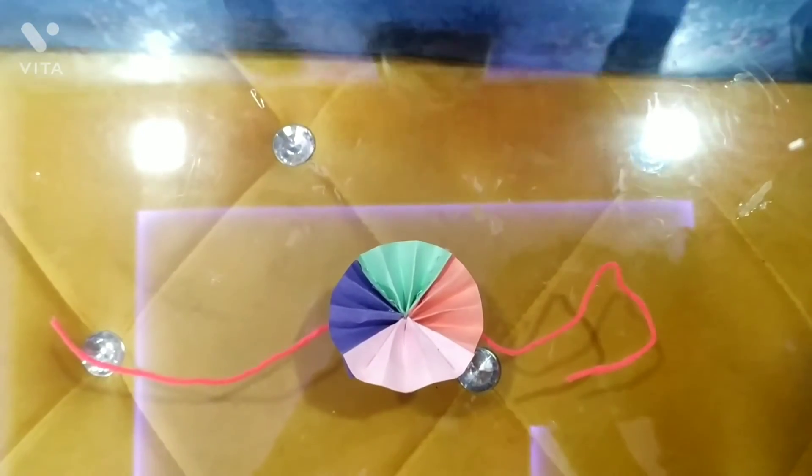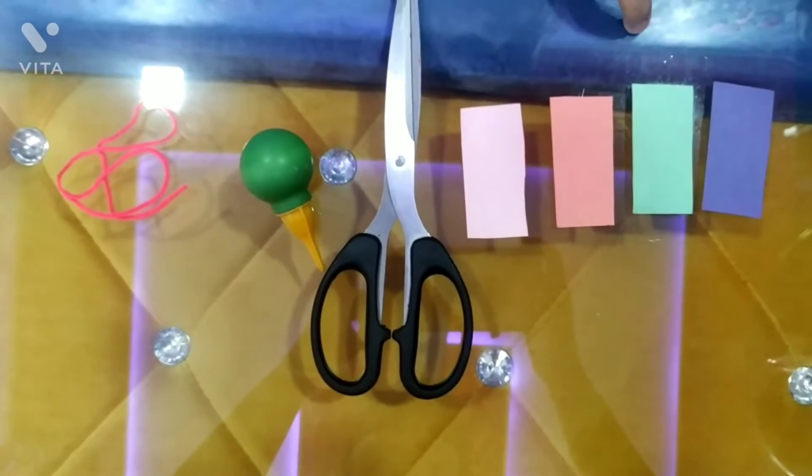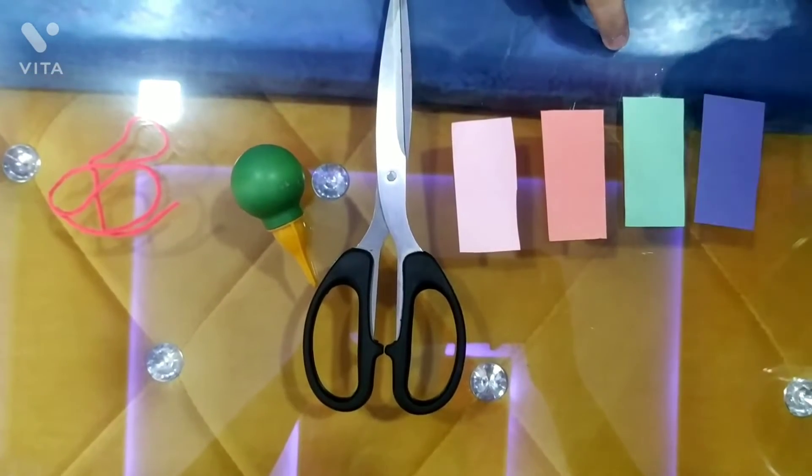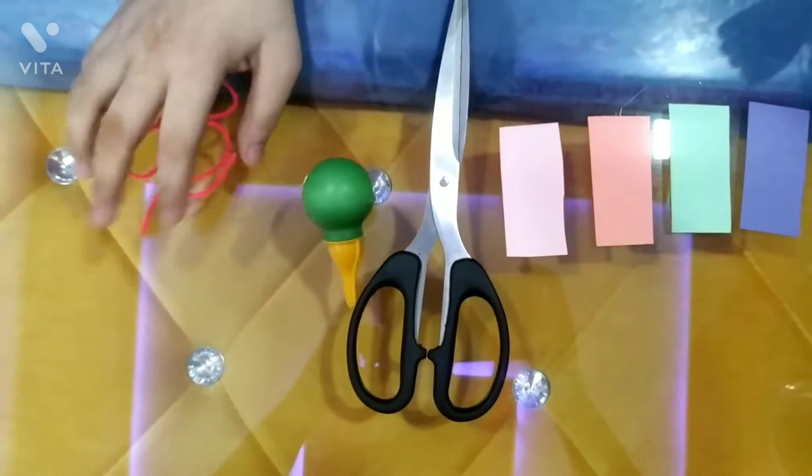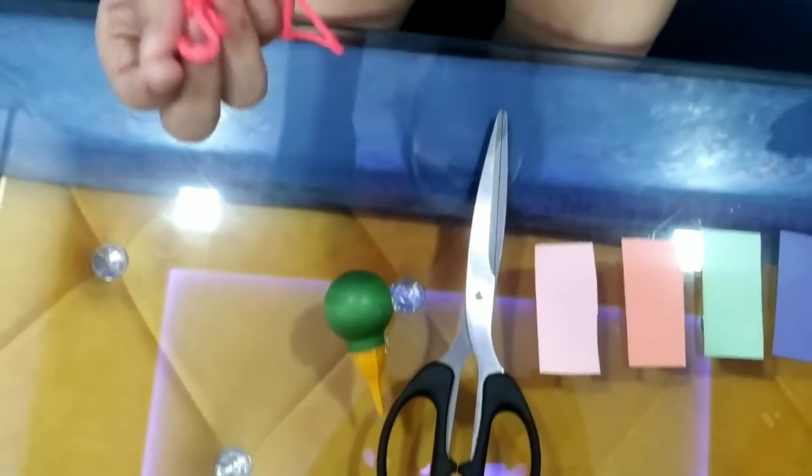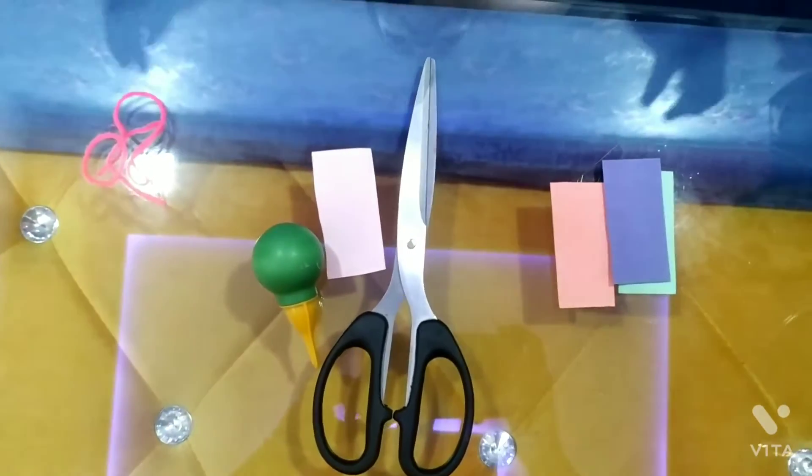Let's start our rakhi making. We need four rectangles 6 into 3, scissor, fabric, and wool. So let's start our rakhi making.